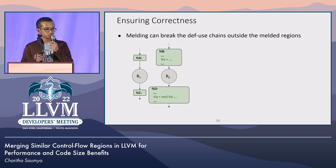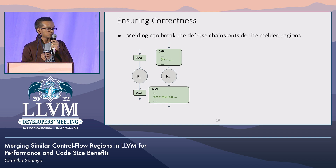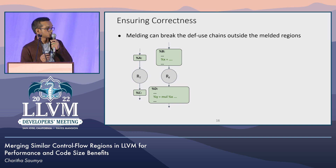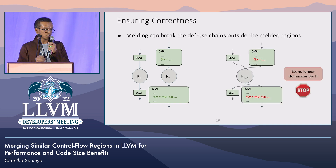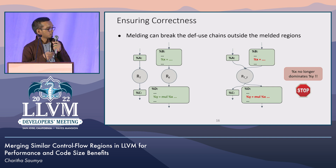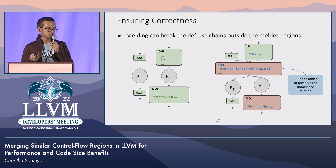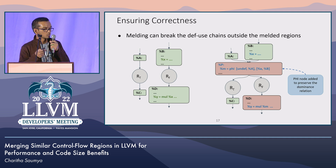We need some extra preparation to ensure the correctness of this transformation. Consider this example where we are merging region R_T with R_F. A definition X dominates its user at definition instruction Y. If we naively merge them, that will break the def-use chain and violate SSA requirements. To solve this, we rely on extra PHI instructions — we add a new PHI instruction which will dominate both regions, and then we can safely merge the two regions.